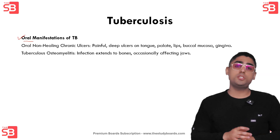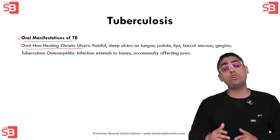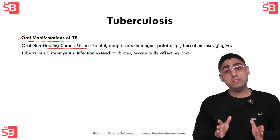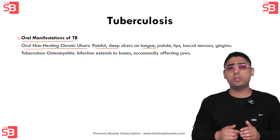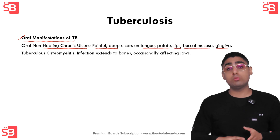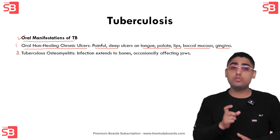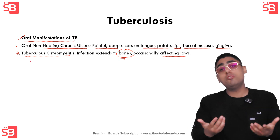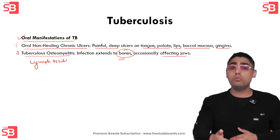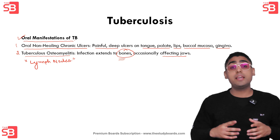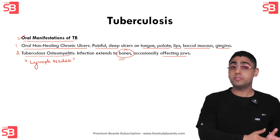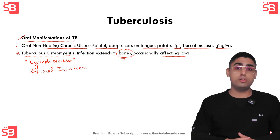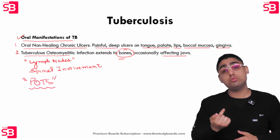Oral manifestations of tuberculosis include: first, oral non-healing chronic ulcers — TB can present as painful, very deep non-healing ulcers in the oral cavity following lung infection, usually found on the tongue but also on the palate, lips, buccal mucosa, and gingiva. Second, TB osteomyelitis — extension of infection into the jawbones. Third, lymph node involvement — cervical, submandibular, and maxillary lymph nodes can become enlarged, firm, and may form cold abscesses leading to pain, swelling, pus discharge, and sinus issues. Spinal involvement by TB can cause curvature of the spine known as Pott's disease.